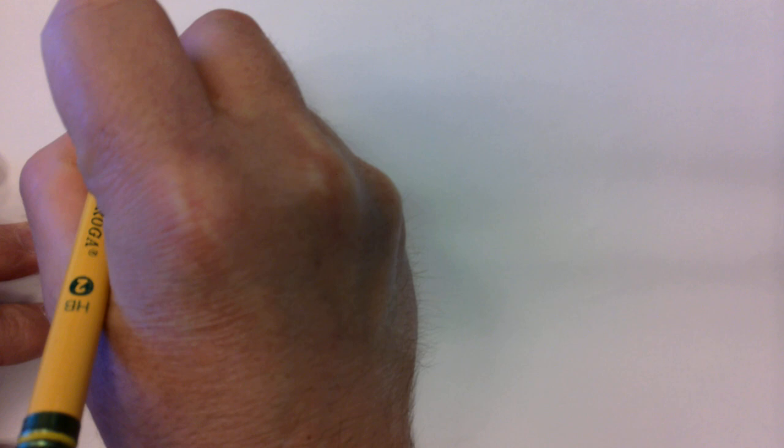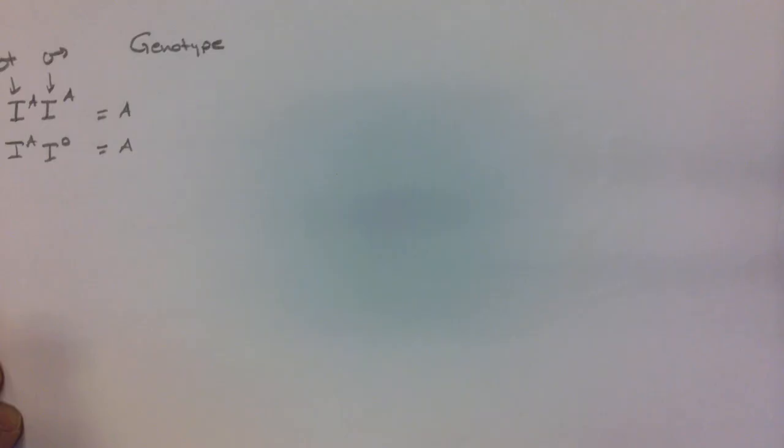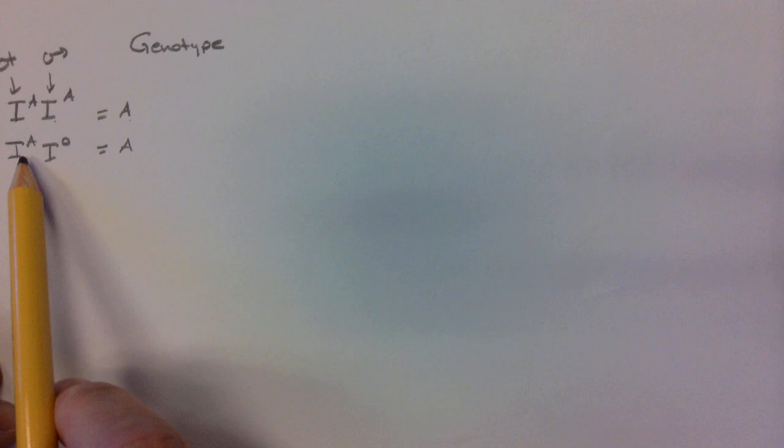Where does all of this come from? It all stems from the genotype, which is going to be shown through mom and dad. We have two alleles: we have IA-IA for type A blood, and we can also have IA-IO, which will also lead to type A blood. You get one allele from mom and one from dad. So if dad is type A and mom is type A, baby will be born with type A. If mom is type A and dad is type O, baby could still be type A.